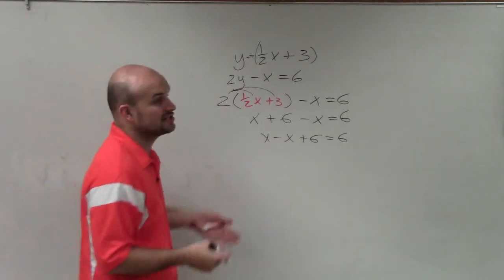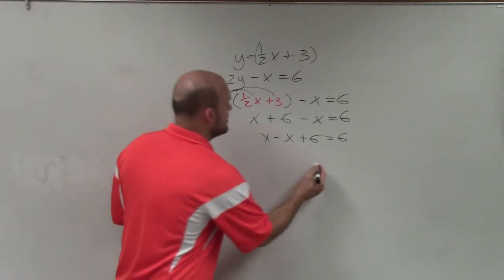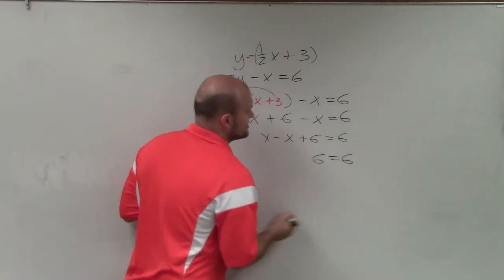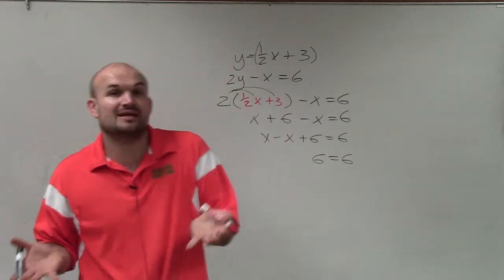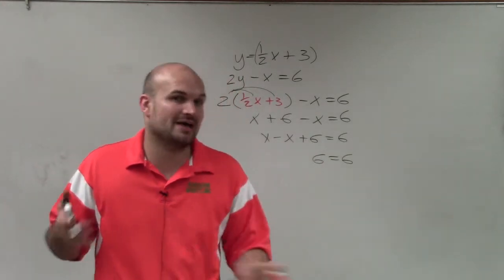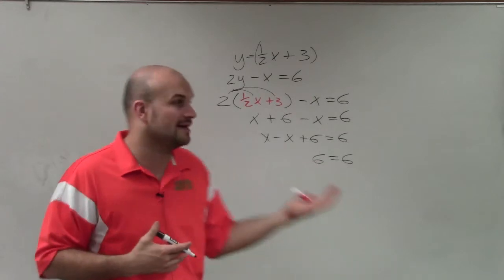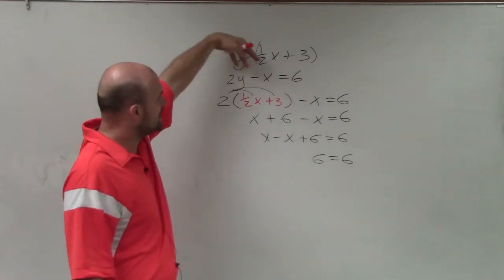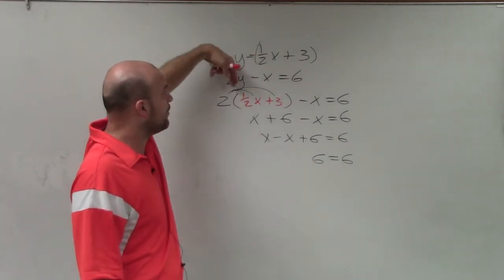Now I can see x minus x is going to go to 0x, which is just 0. So I'm left with 6 equals 6. Now 6 equals 6 is always going to be 6 equal to 6 no matter what the value is for x or what the value is for y. Meaning, no matter what numbers I put in for x and for y, this equation is always going to be true.